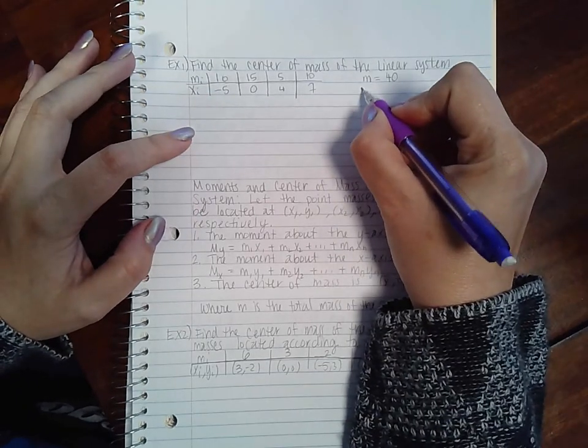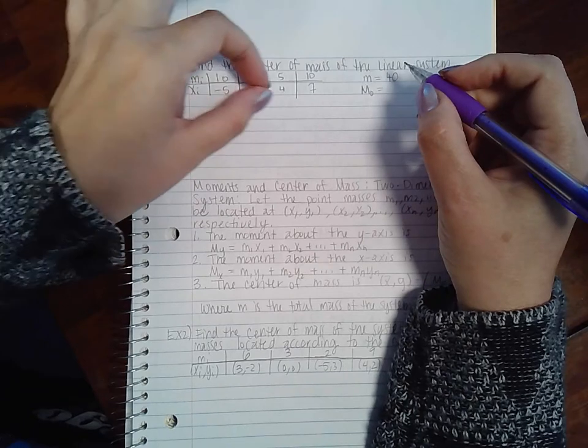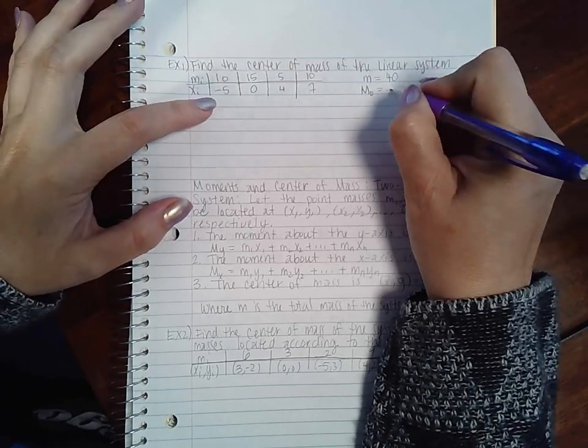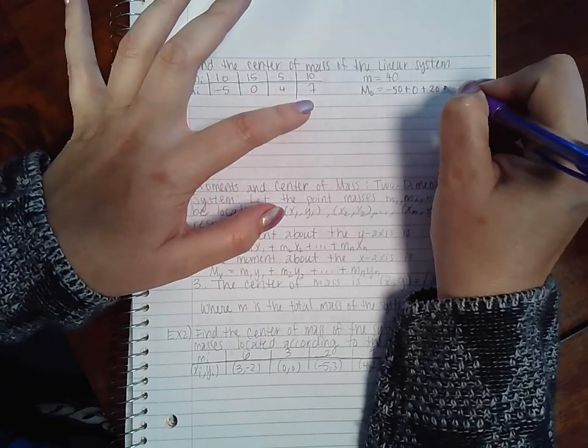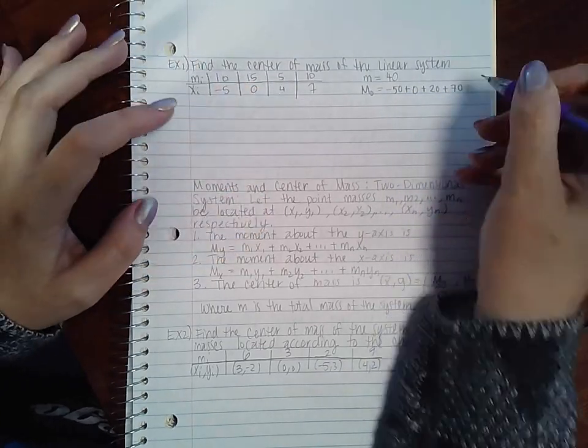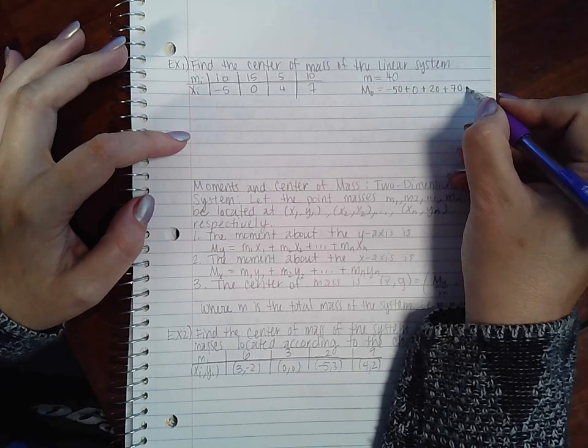My m sub zero is going to be the product of all of these summed together, so negative 50 plus zero plus 20 plus 70.